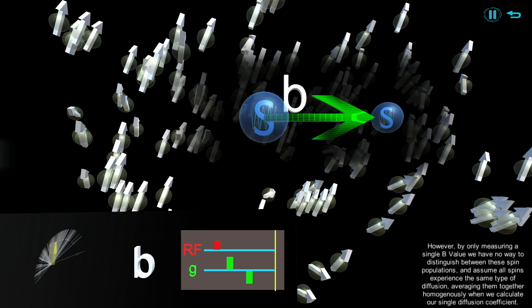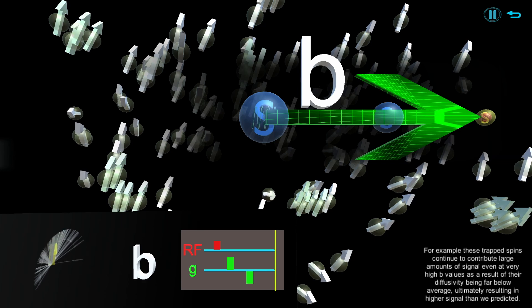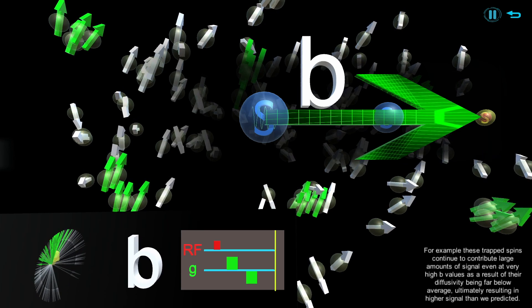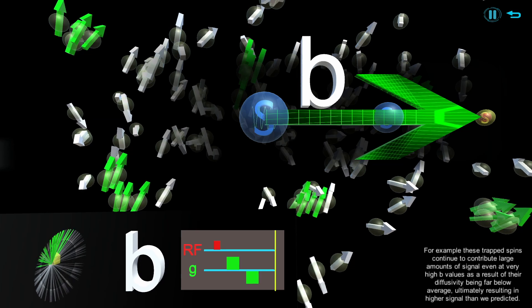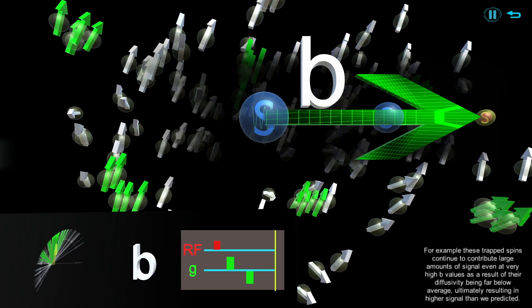If we increase the b-value, we can now see our estimate does not match the actual measurement because it does not account for the subpopulations of spins. For example, these trapped spins continue to contribute large amounts of signal even at very high b-values as a result of their diffusivity being far below average, ultimately resulting in higher signal than we predicted.